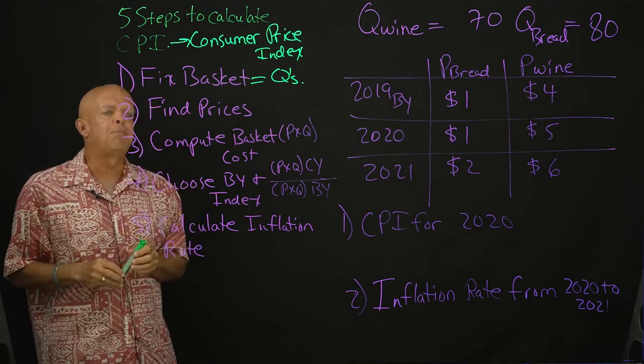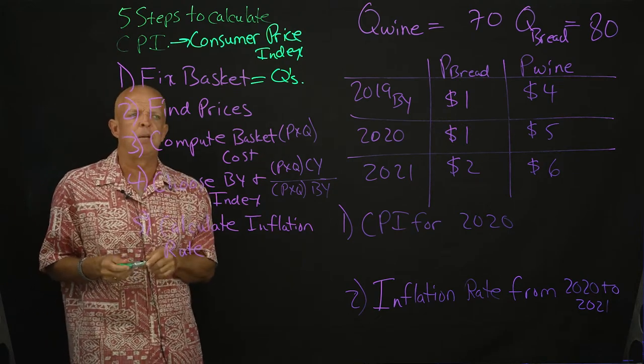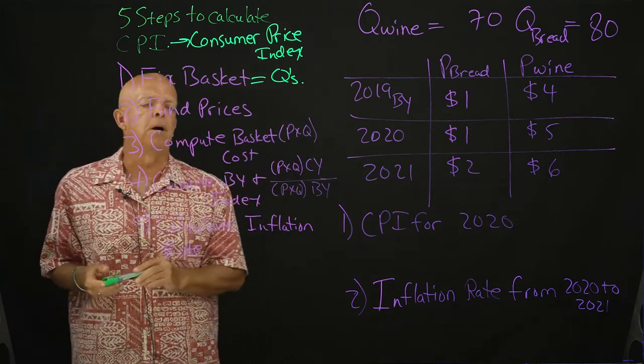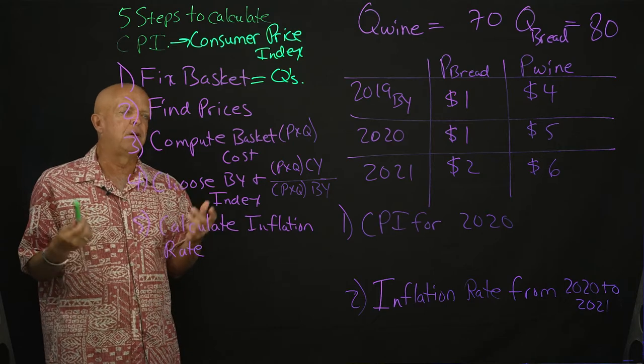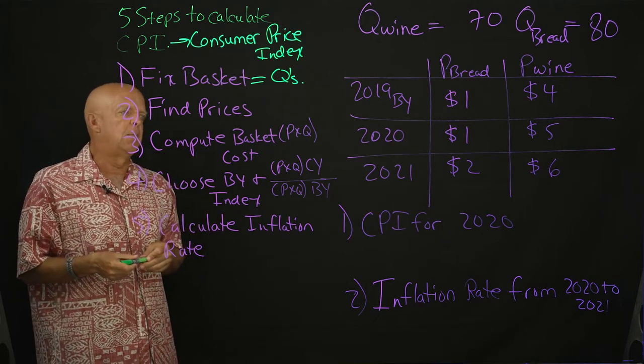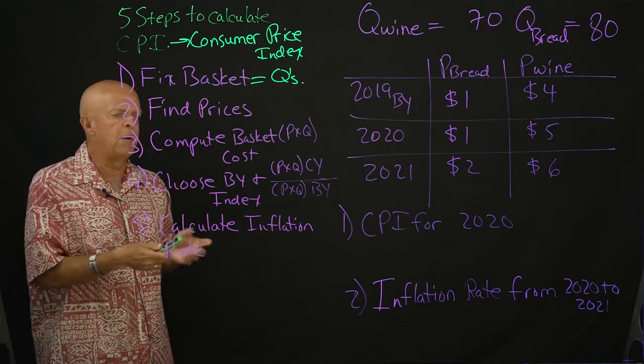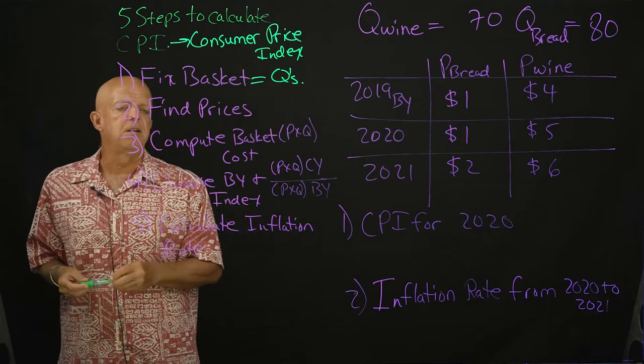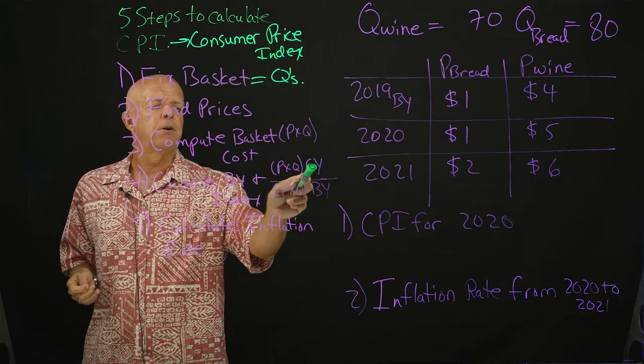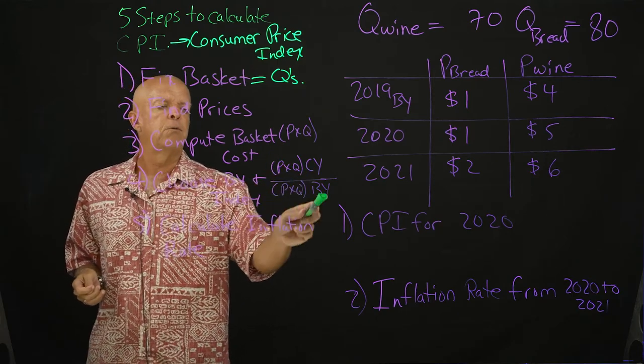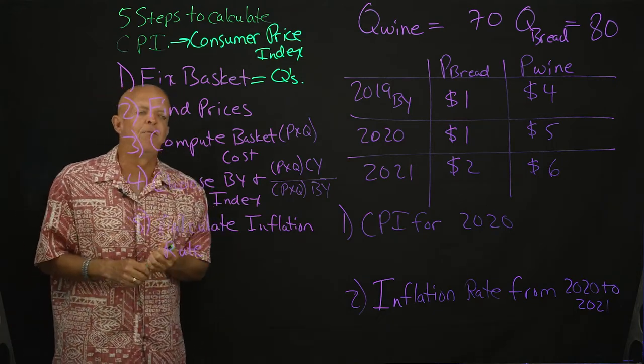Third step is compute the basket cost. Basket cost is very much the same as what we did for the GDP, and that would be the price times the quantity. Fourth step is to choose a base year. So we have to choose a base year, a notion of comparison between what is current and what we're measuring from, and ultimately the index.